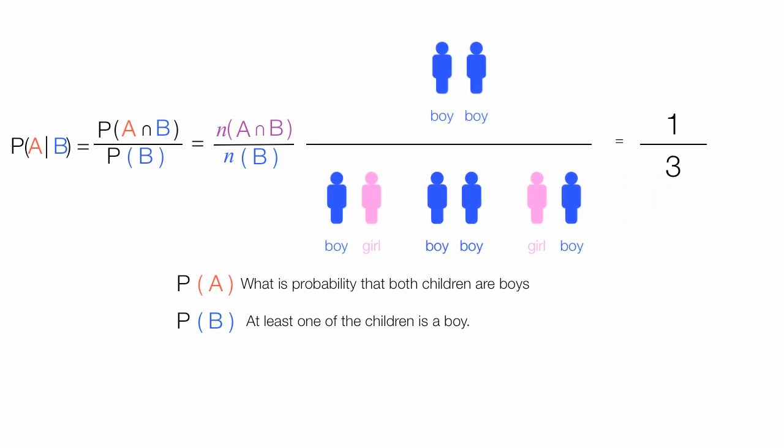The denominator is just the number in the subset which is B. In this case that's 3 and the numerator is just the number in the intersection. In this case that is 1. To answer the question, what is the probability that both children are boys knowing that at least one child is a boy is 1 out of 3.